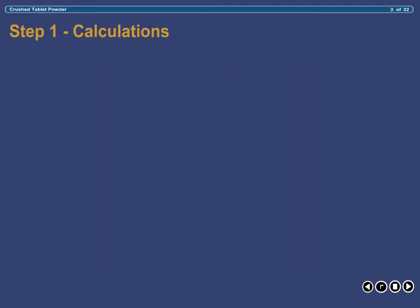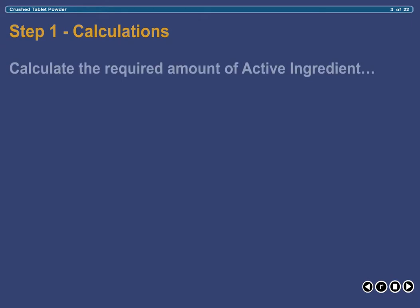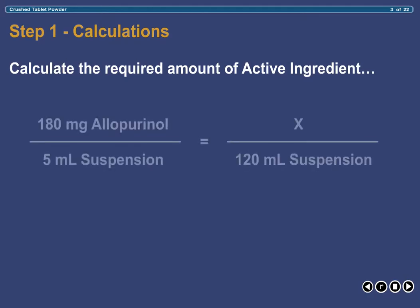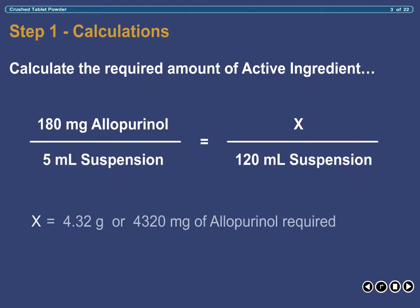Step 1 involves calculations to determine the amount of active ingredient — allopurinol in this case — that is needed to compound the prescription. This is easily accomplished by setting up a simple proportion, which multiplies the desired concentration by the desired total volume. Doing this, we see that the amount of allopurinol needed to compound this preparation is 4.32 grams.